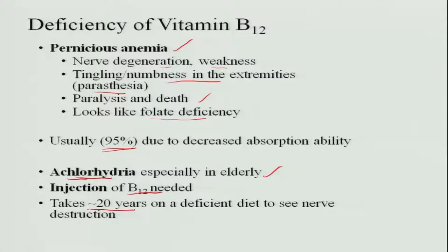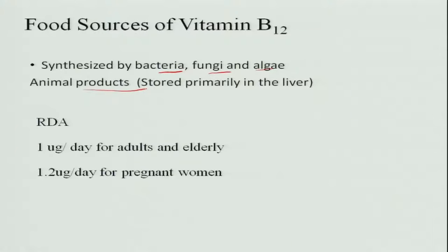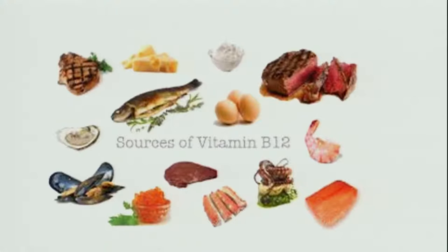It takes almost 20 years of a deficient diet to see the effect on the nerves. Regarding food sources, vitamin B12 is synthesized by bacteria, fungi and algae, but since absorption occurs only in the stomach and not in the large intestine, the main source is only animal products — it is not available in plant products. Therefore, deficiency is very low in non-vegetarians but more frequent in vegetarians. The recommended dietary allowance is 1 microgram per day for adults and elderly, and 1.2 micrograms per day for pregnant women.